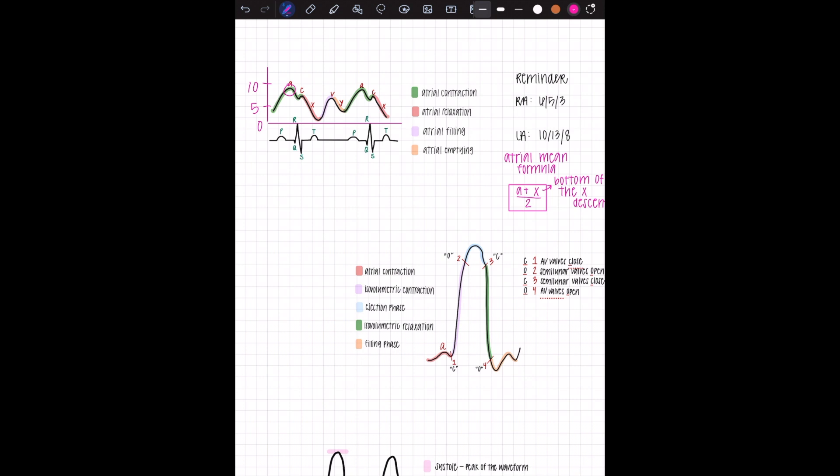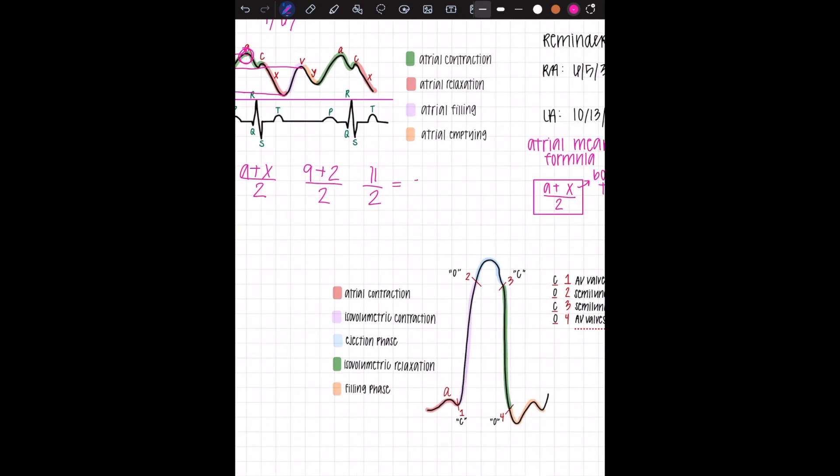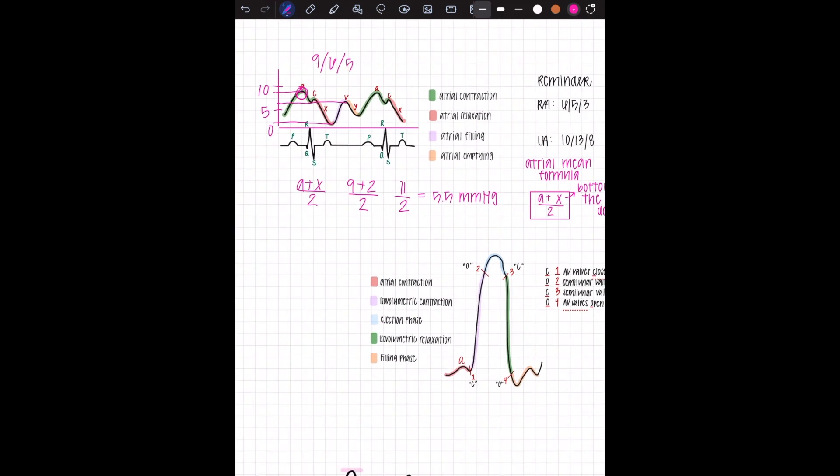You're going to take the numbers off of the waveform and I'll put a scale on here so you can see what this looks like. This one's pretty obvious on what the A wave and the V wave are. The A wave, you carry over to a scale, that's about nine. The V wave carry over to the scale, that's about six. Then we need to calculate the mean. You're going to do A plus X over two. So A is nine plus the bottom of the X descent, bring that over to the scale, that's about two as well.